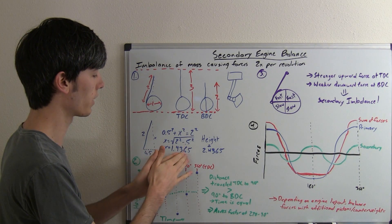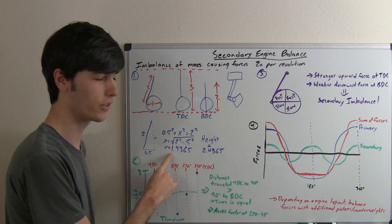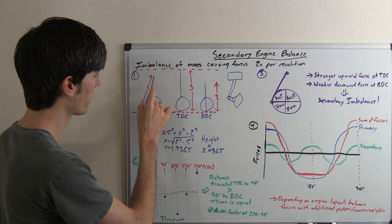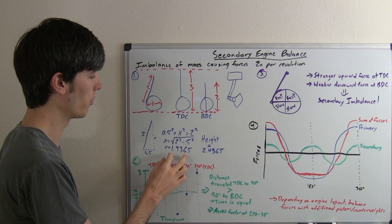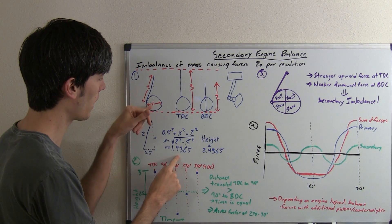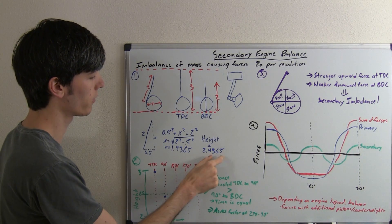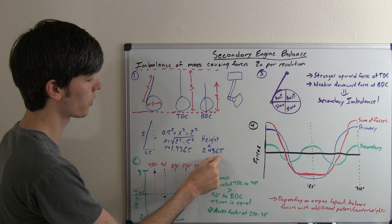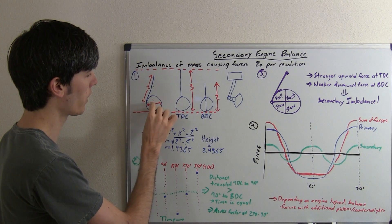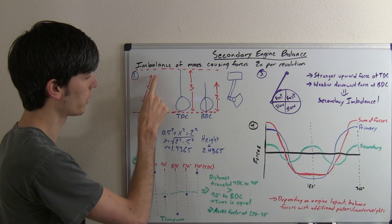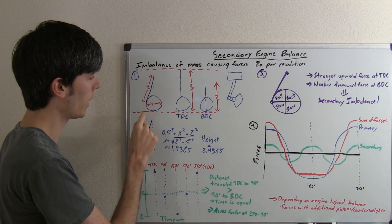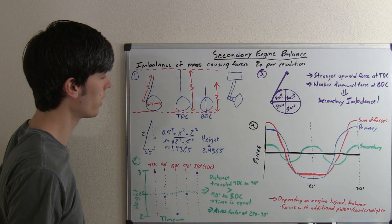So x equals 1.9365. And this is interesting because it's not 2, and obviously it wouldn't be 2 because this is 2, but the reason I say that is, if you add this to the height, that means this height right here is 2.4365. So you've got 0.5 plus the 1.9365, and that gives you the total height, and this is going to be at a 90 degree rotation.